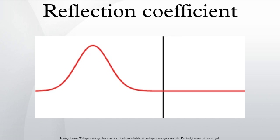For example, it is used in optics to calculate the amount of light that is reflected from a surface with a different index of refraction, such as a glass surface, or in an electrical transmission line to calculate how much of the electromagnetic wave is reflected by an impedance.